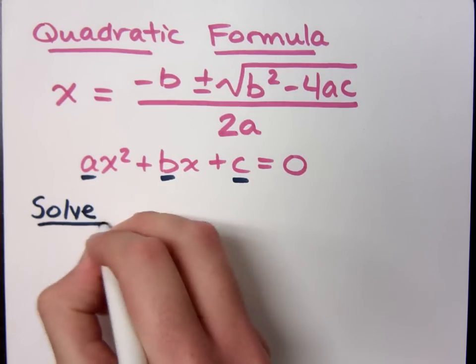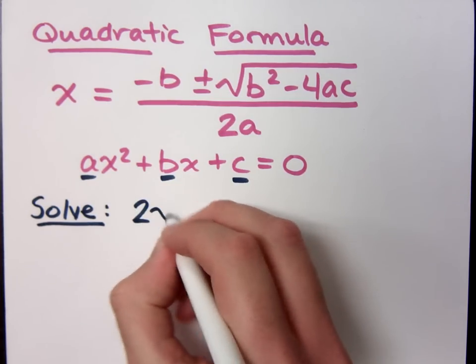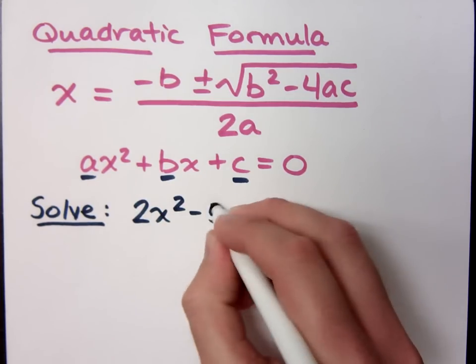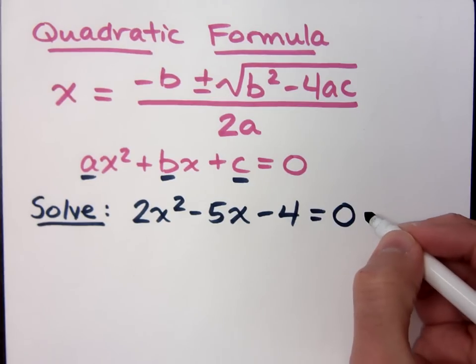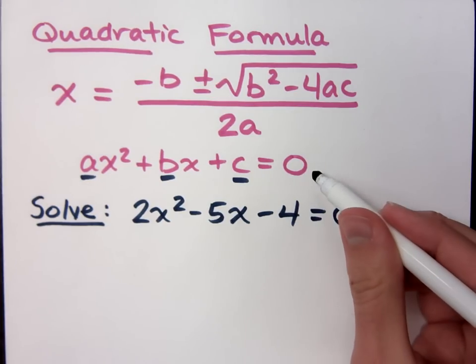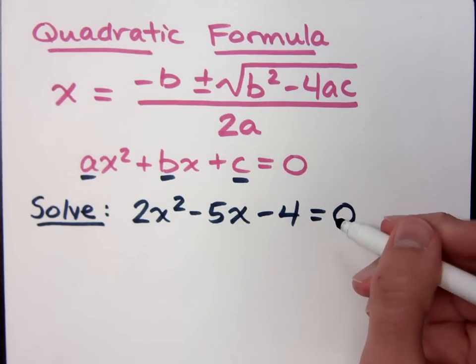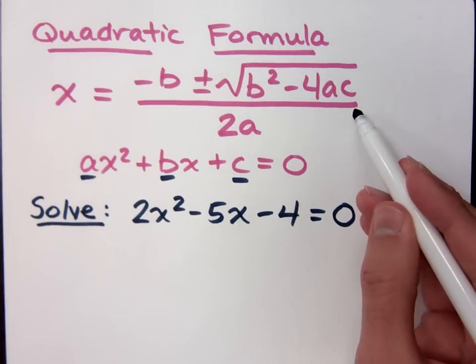If I ask you to solve this quadratic equation, 2x squared minus 5x minus 4 is equal to 0. See how this is set up just like your quadratic equation? So I just need to identify the a, b, and c and plug into my formula.